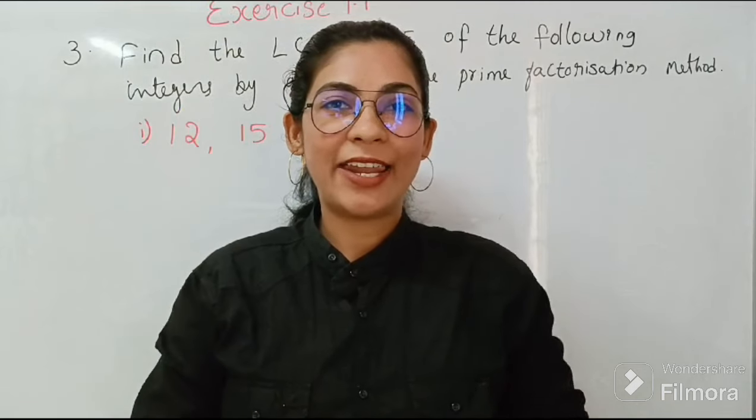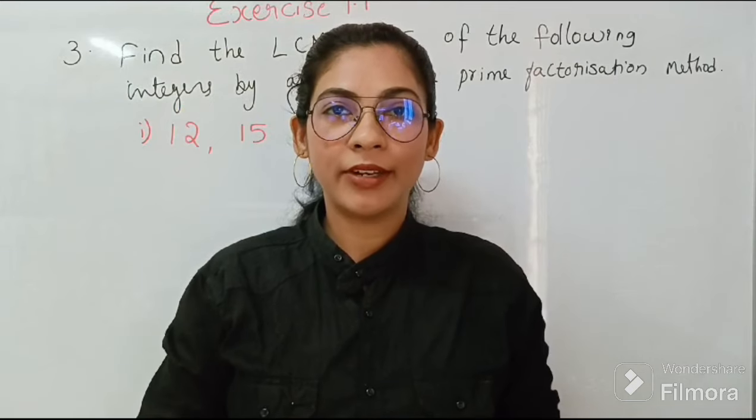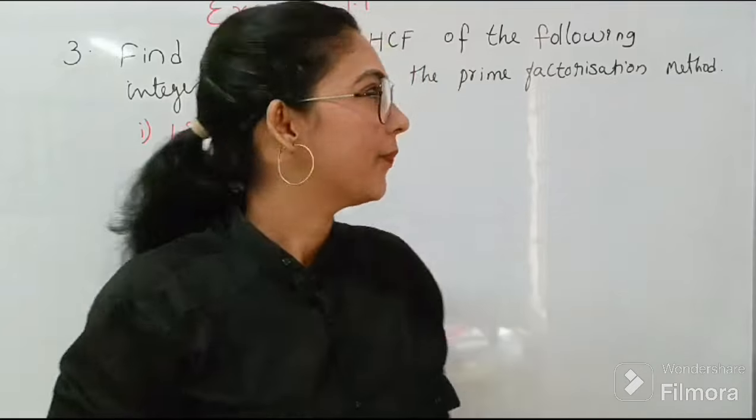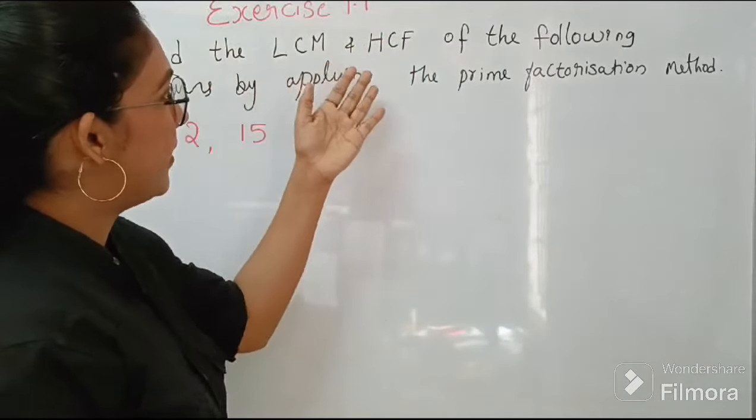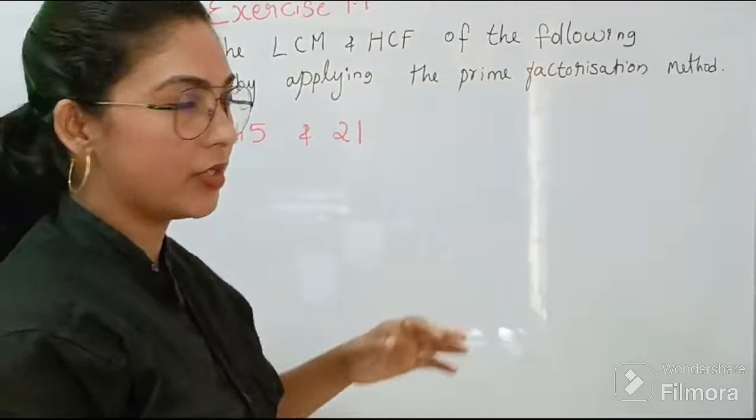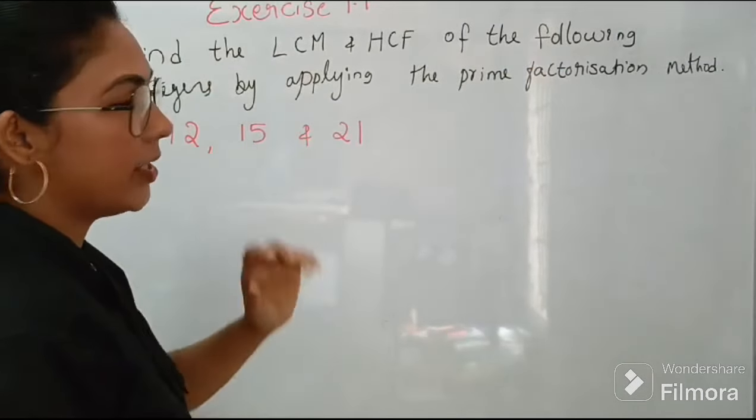Welcome back. This is Ramadz and it's me Priska Joseph. Today we are discussing question number 3 from the exercise 1.1. So let's start. The question is find the LCM and HCF of the following integers by applying the prime factorization method. Here is the first question: 12, 15 and 21.